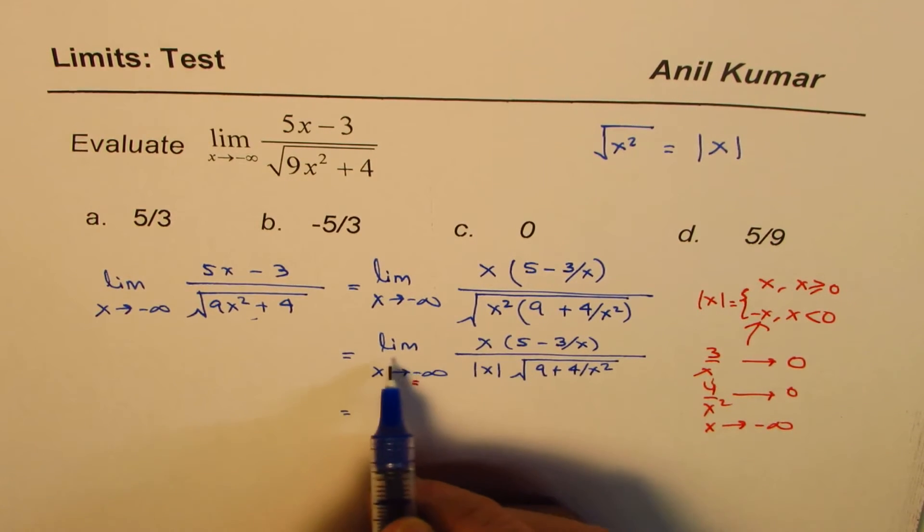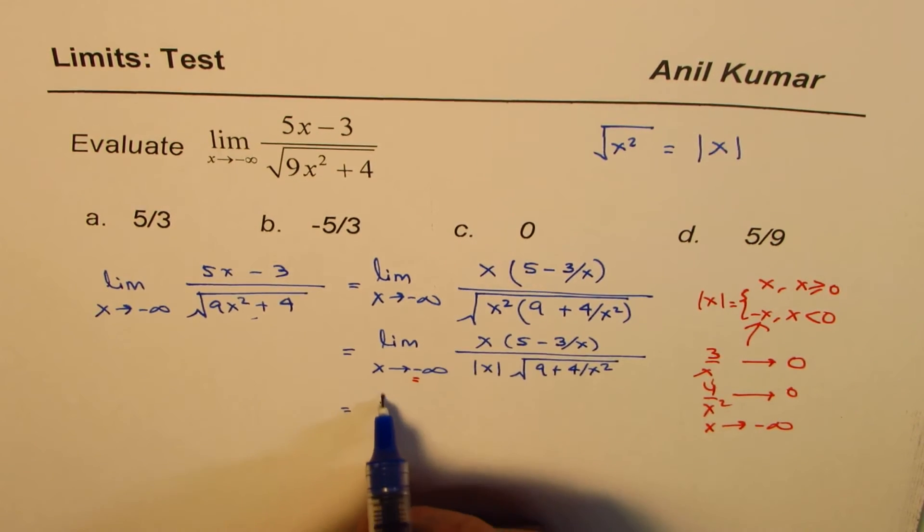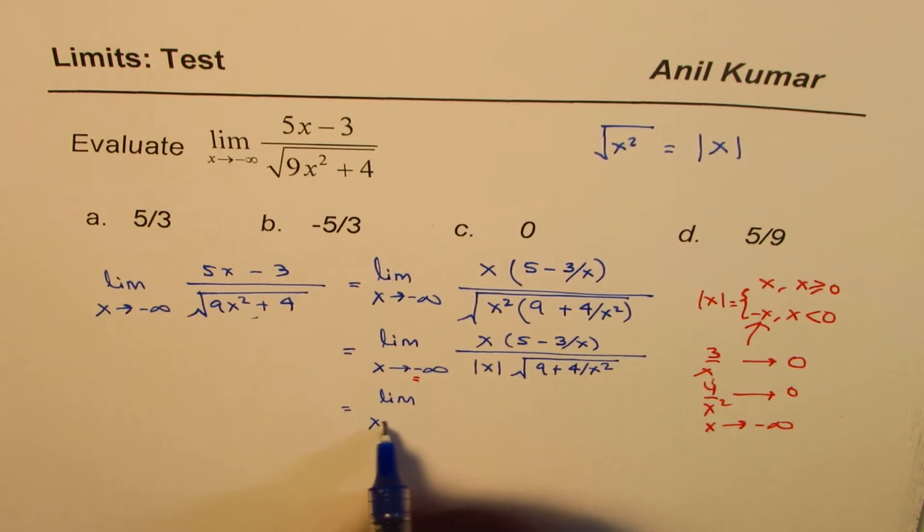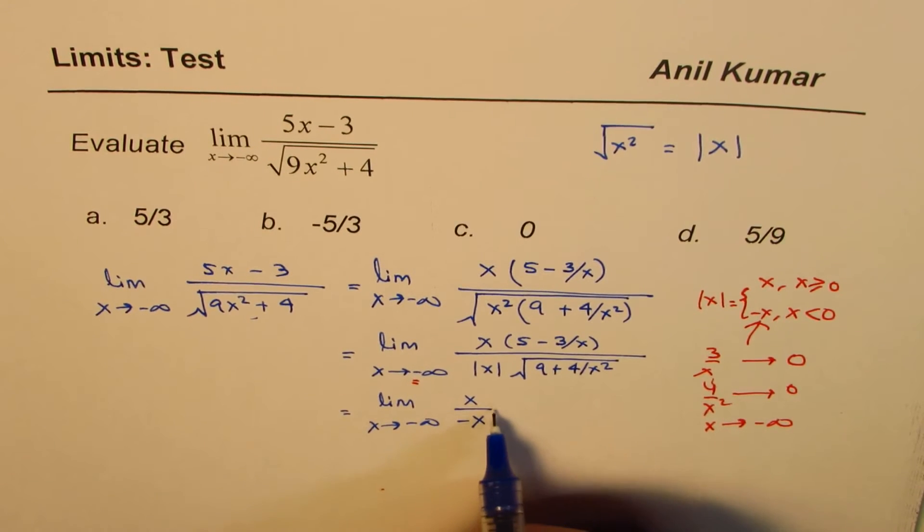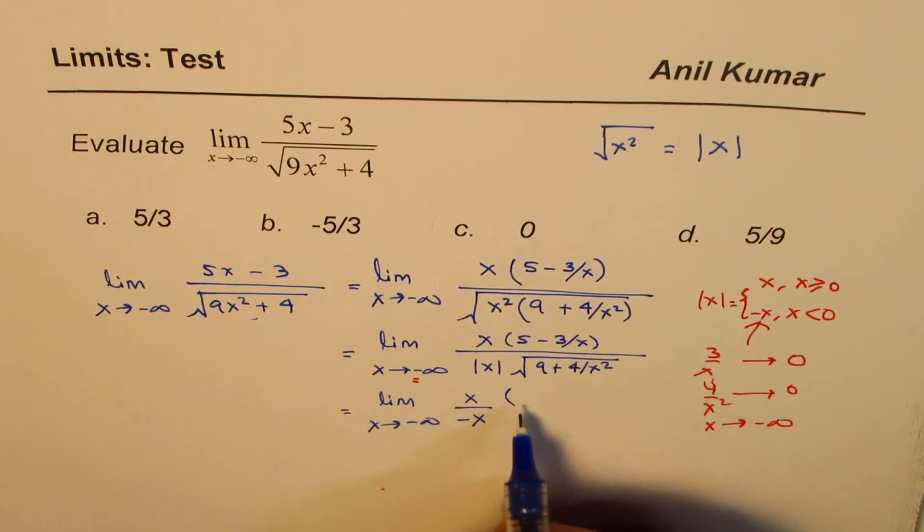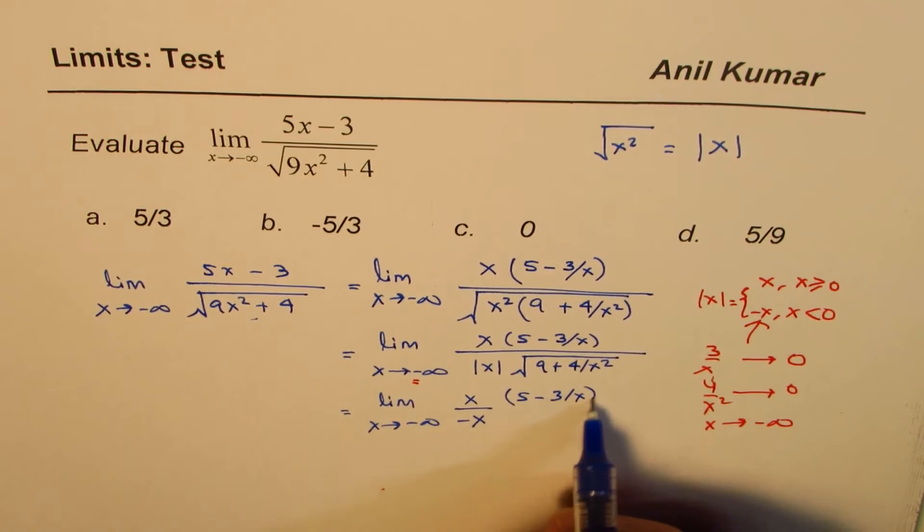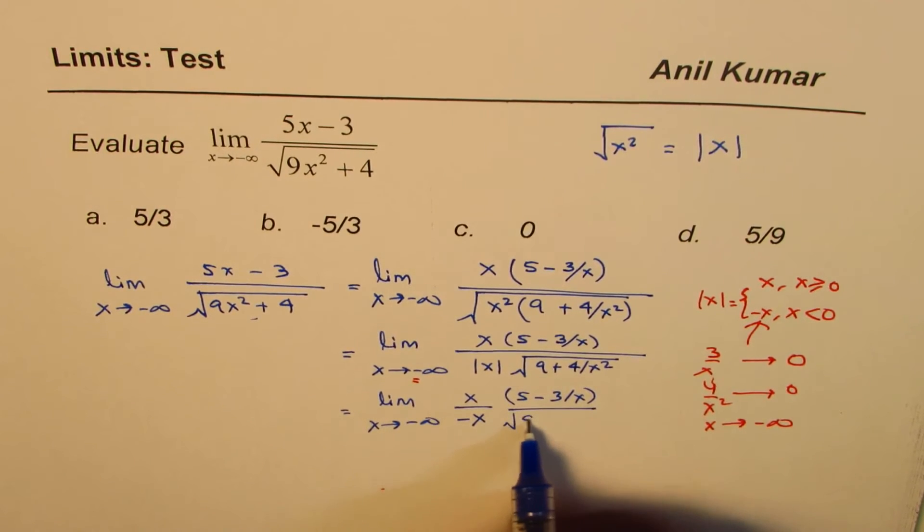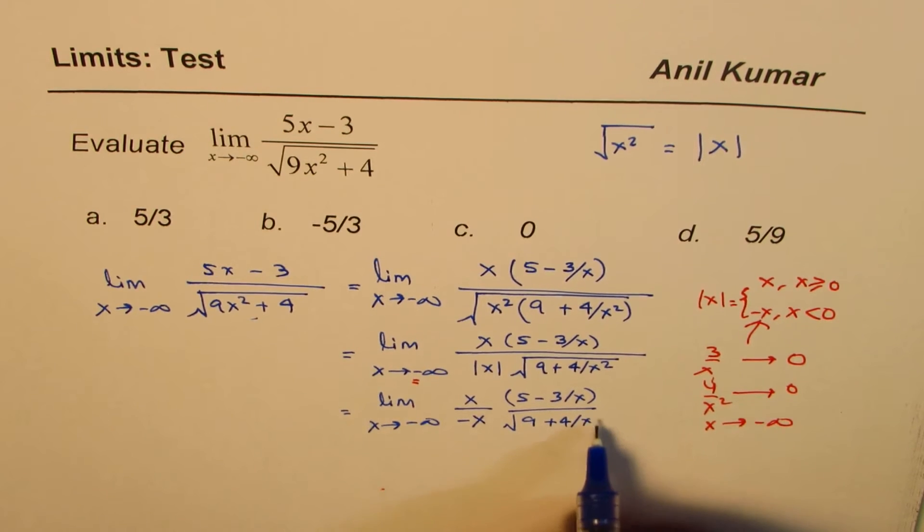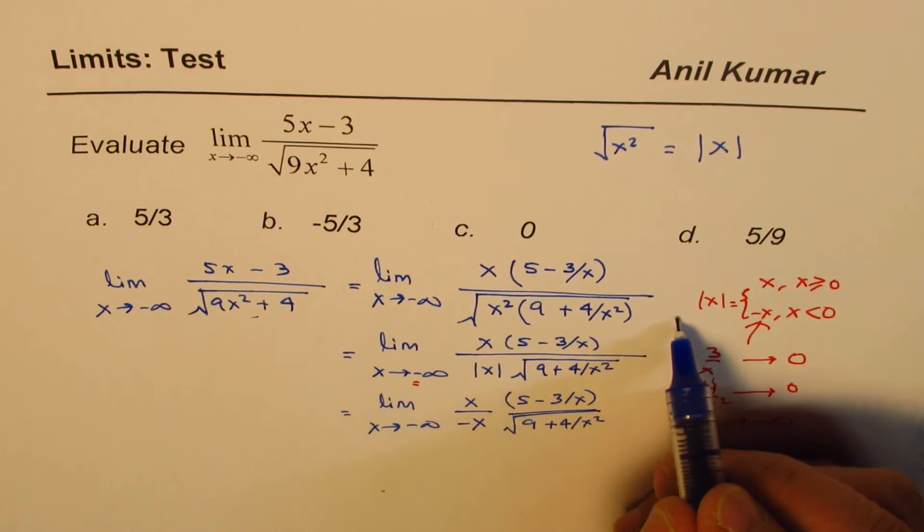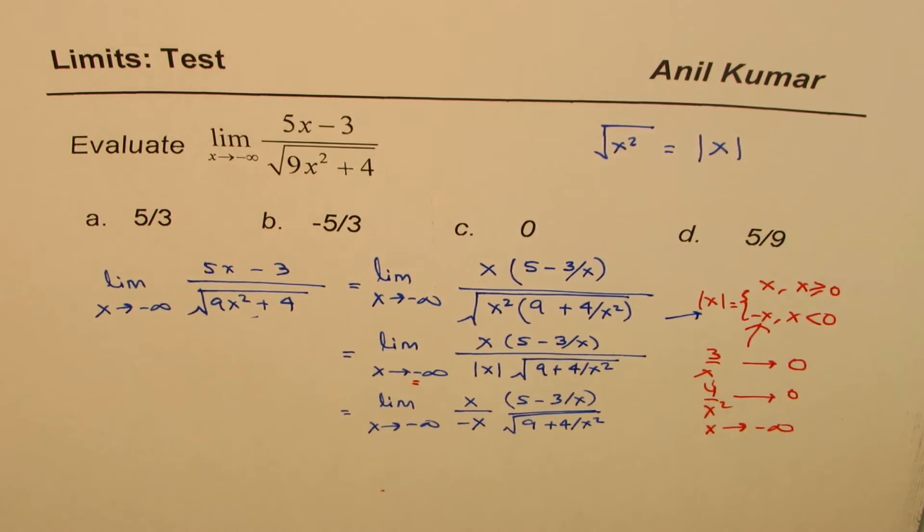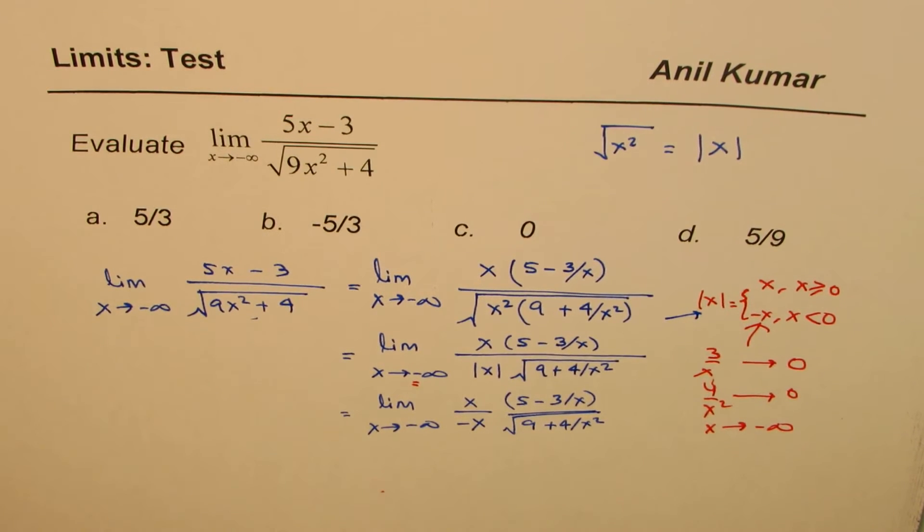we could write all this as limit x approaches minus infinity. x over minus x. And in the numerator, we have 5 minus 3 over x divided by square root of 9 plus 4 over x square. Now, I did one at a time, so I just utilized this portion which we had discussed.